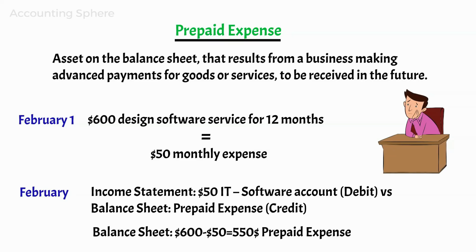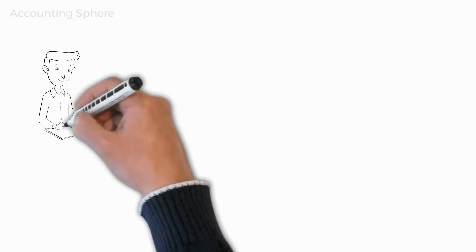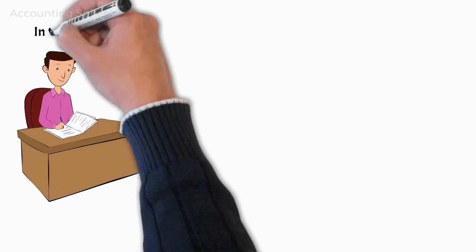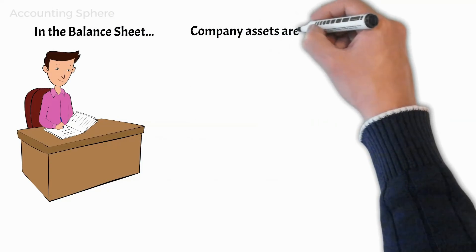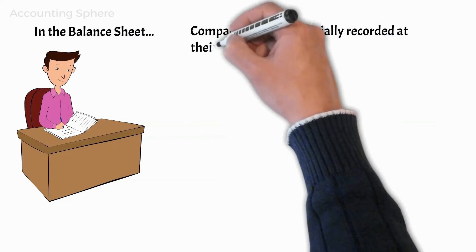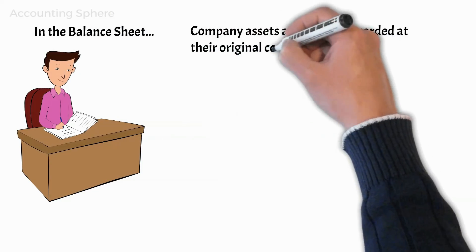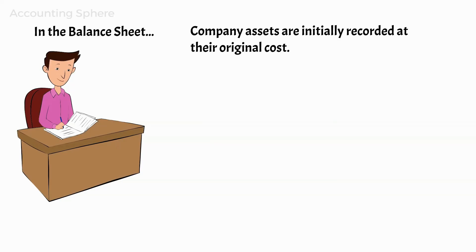John starts to rationalize the connection between the income statement and the balance sheet. As he keeps reading, he discovers that each of his company's assets were recorded at their original cost, and that even if the fair market value of an item rises, an accountant will not adjust the reported amount of that asset on the balance sheet. This is due to the cost concept, which is another fundamental accounting theory.